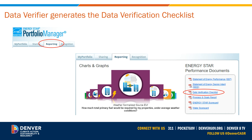After the building owner has completed all necessary steps, the data verifier can now begin the process of generating and completing the data verification checklist. As the data verifier, you will start by logging into your Energy Star Portfolio Manager account. Once logged in, go into the Reporting tab on the upper left-hand corner. On the right-hand side of the page, find the PDF link titled Data Verification Checklist under Energy Star Performance Documents.